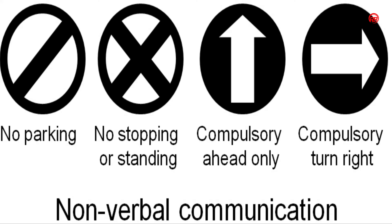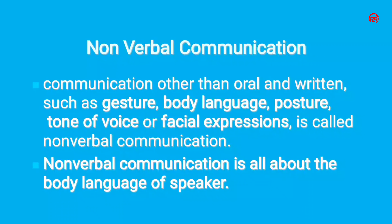And the next type is non-verbal communication. Non-verbal communication is fully based on signals, symbols, signs and so on. Here I have given you 4 symbols. The first one is indicating no parking, and the second one indicates no stopping or standing, the third one is compulsory ahead only, and the fourth one is compulsory turn right. So all the symbols have some inner meaning. This is non-verbal communication. Communication other than oral and written — such as gesture, body language, posture, tone of voice or facial expressions — is called non-verbal communication.